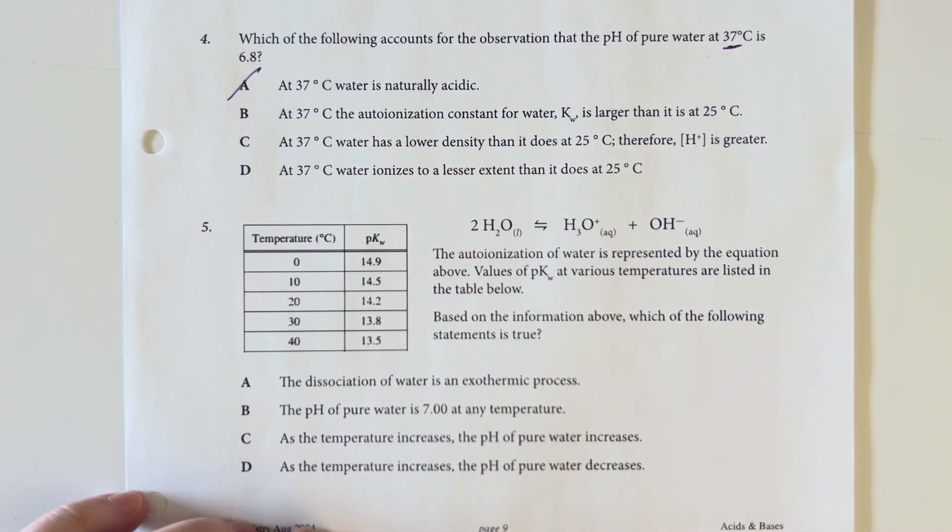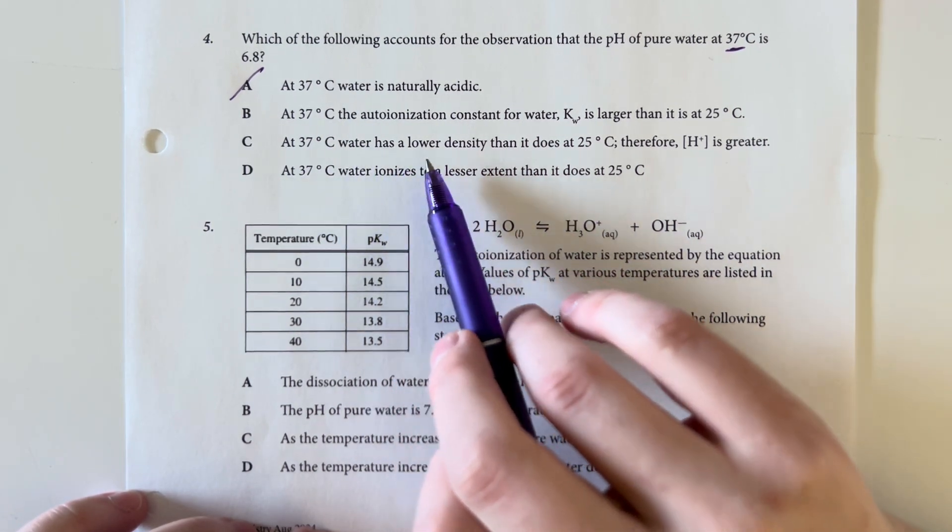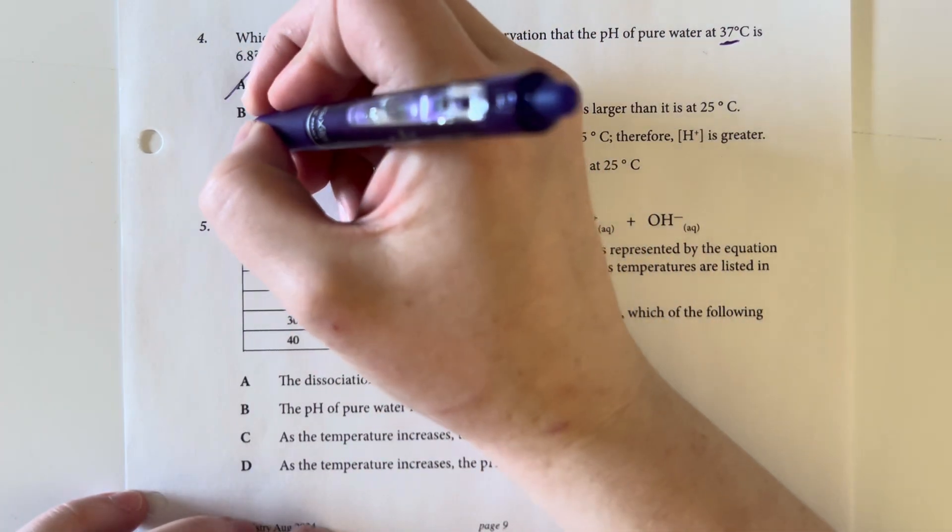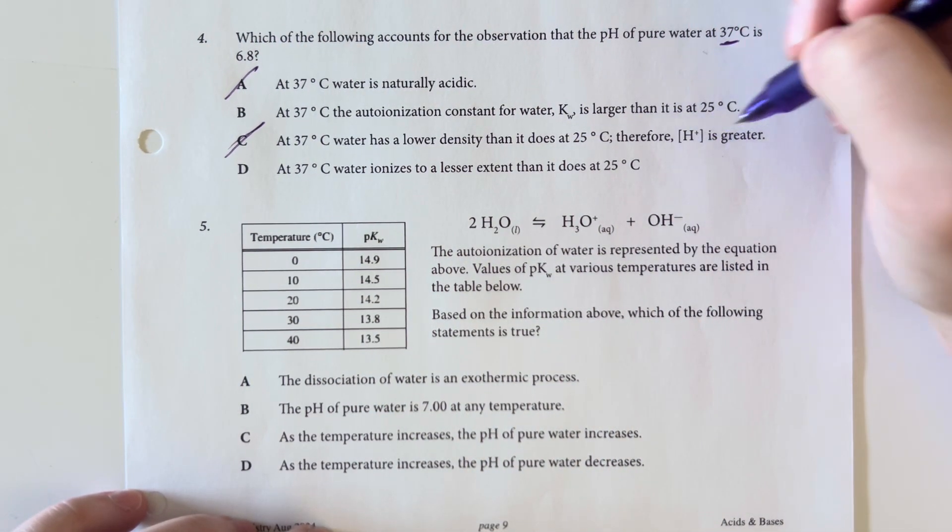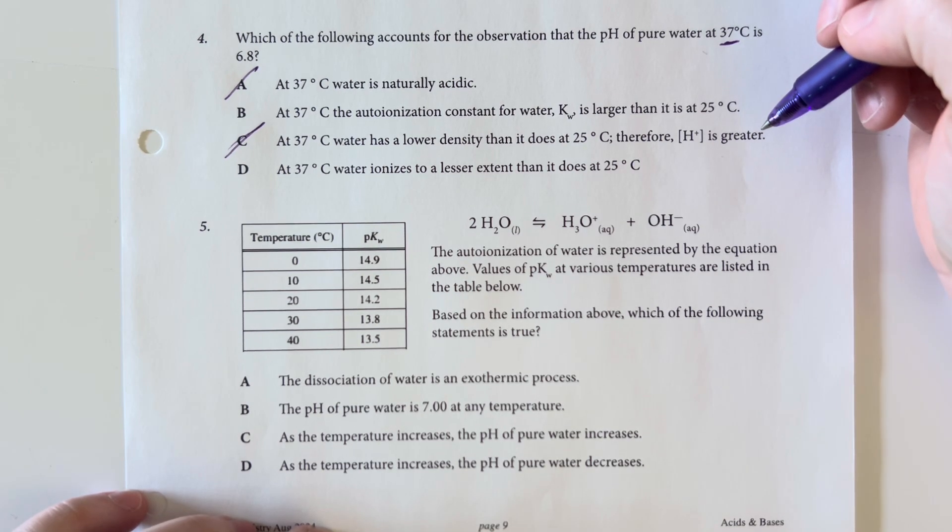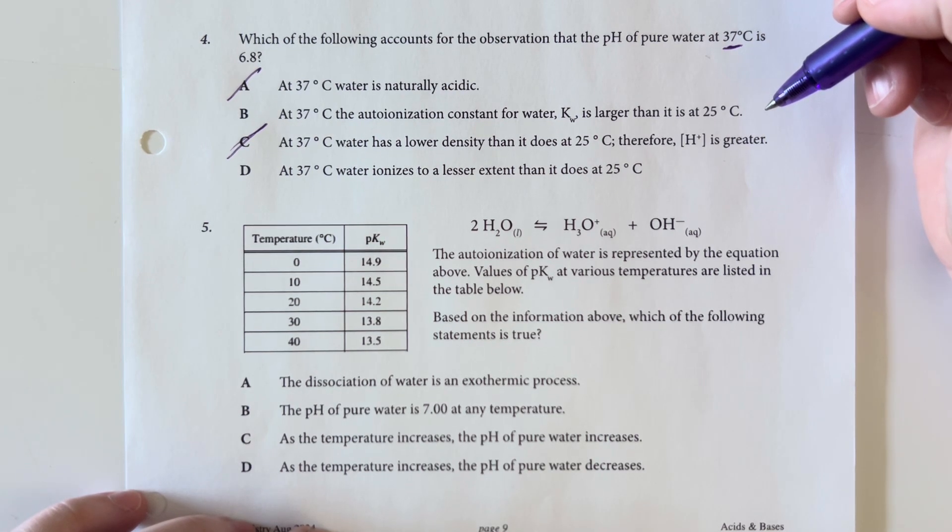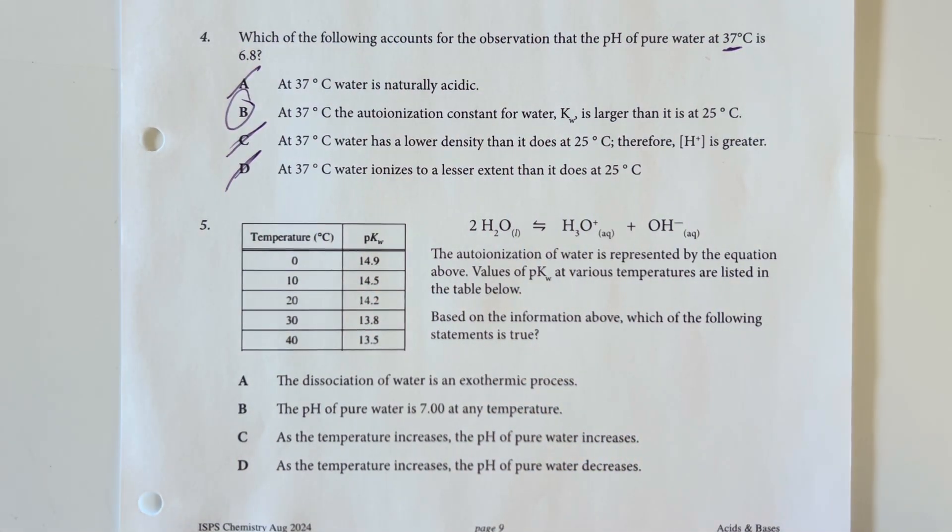So water is not naturally acidic. The temperature does increase the auto-ionization, however that's not a great statement. At 37 degrees, water has a lower density than at 25 degrees, therefore the concentration of hydrogen is greater. Density is going to be less, that is correct. However, the concentration of hydrogen is not going to be affected by the density. It's more that we have the energy to break up into constituent ions. And then D says at 37, water ionizes to a lesser extent. That is the exact opposite. So answer choice B says that at 37 degrees, the auto-ionization constant for water kW is larger, and that is going to be correct.